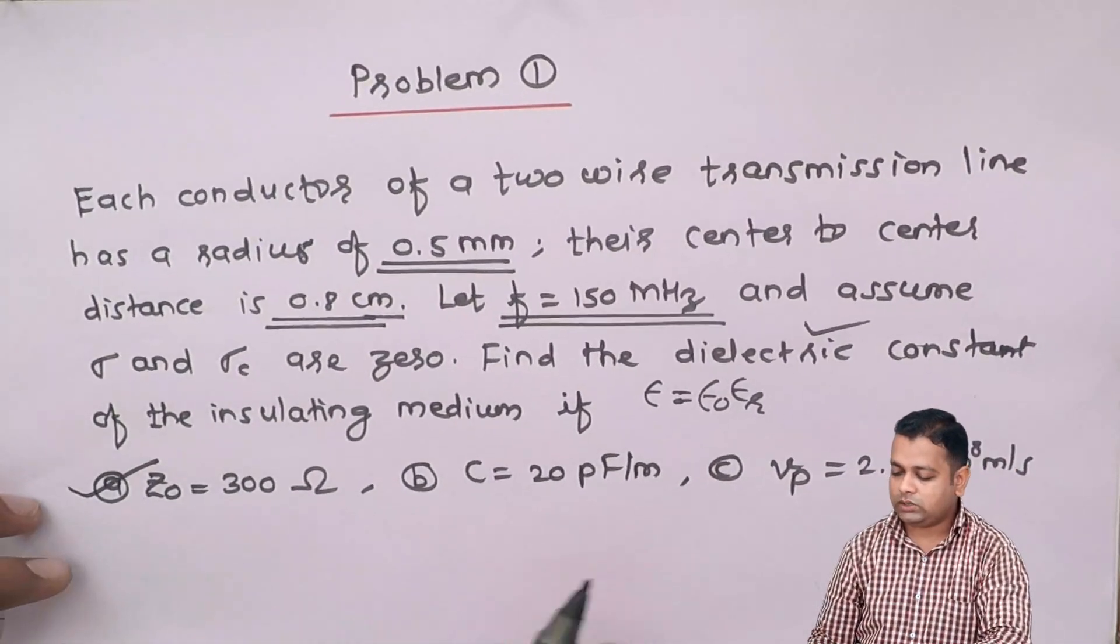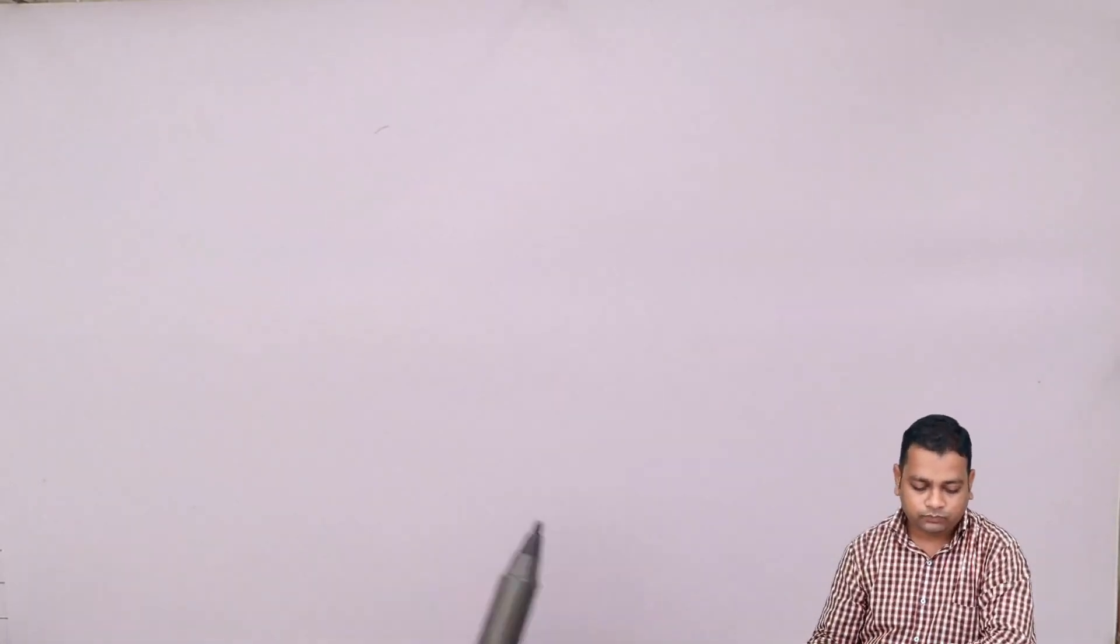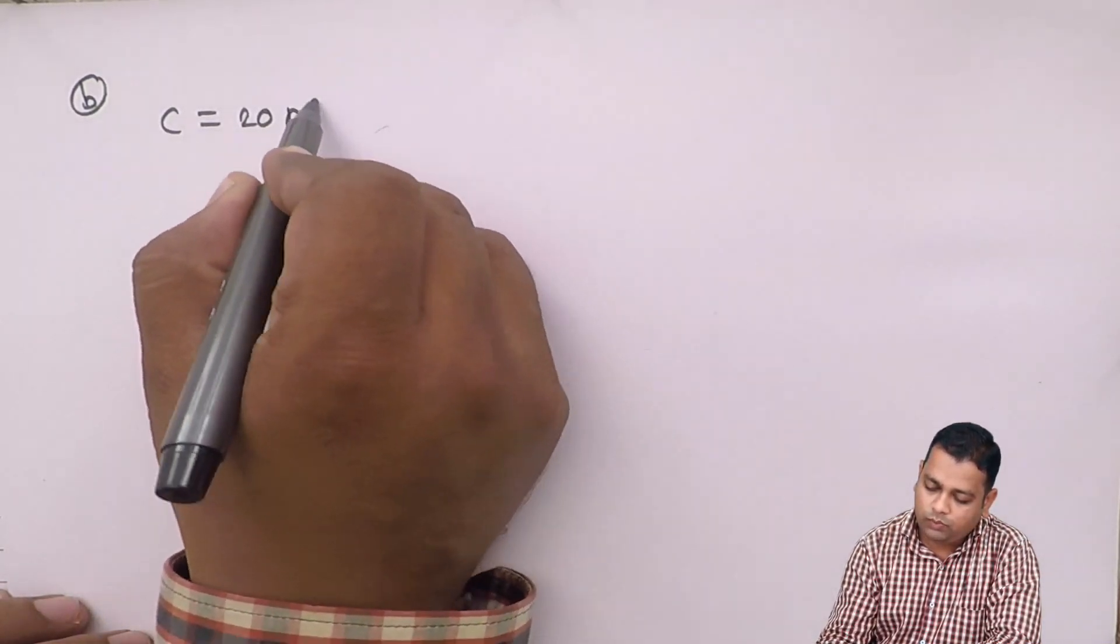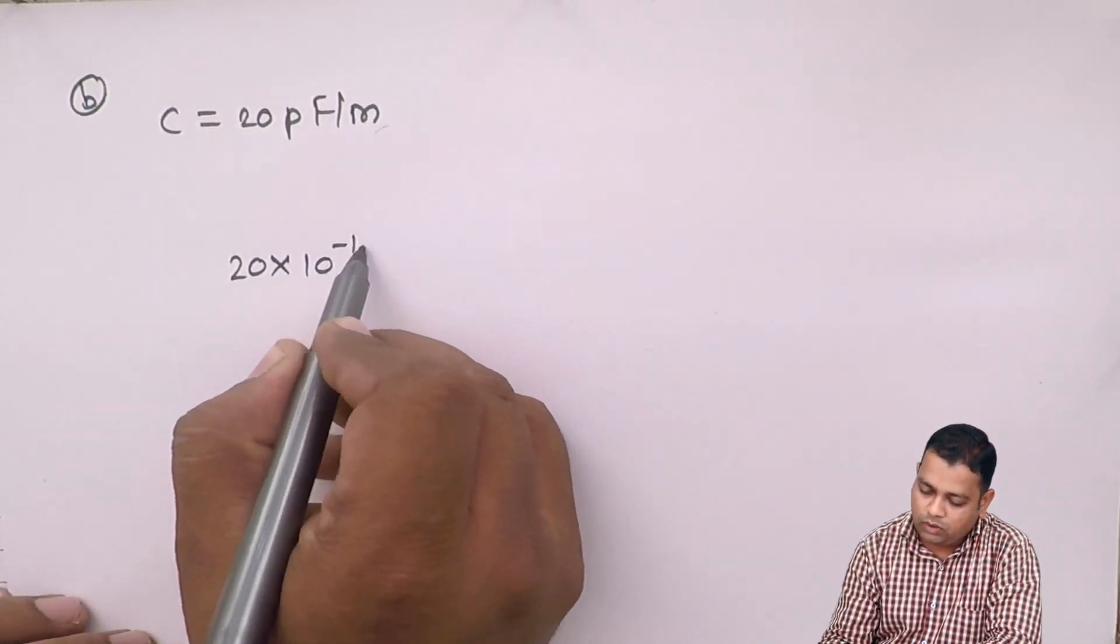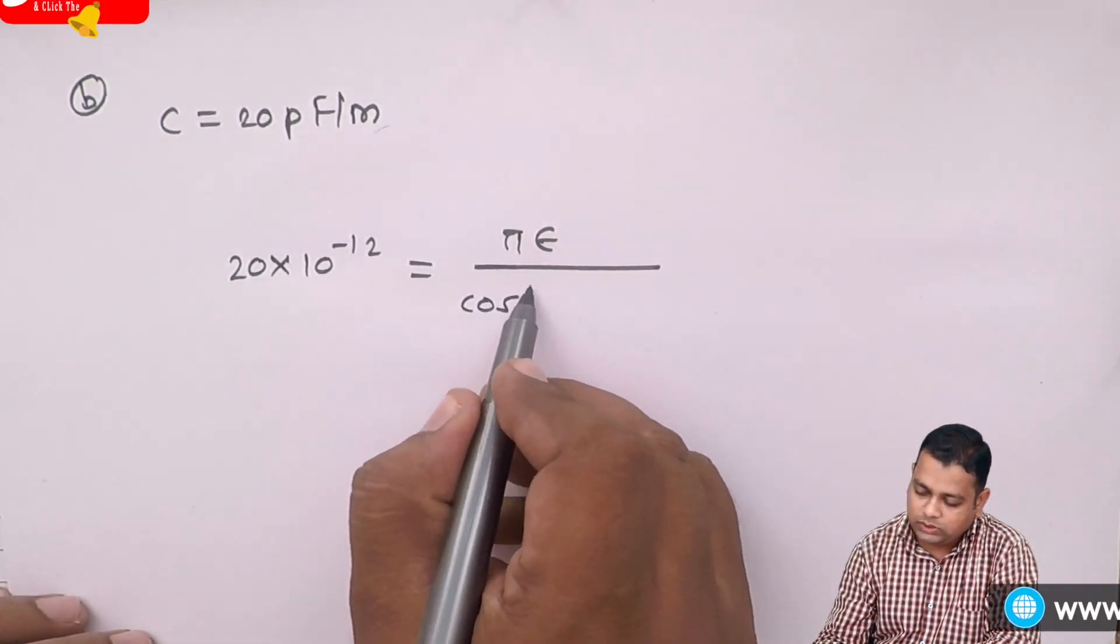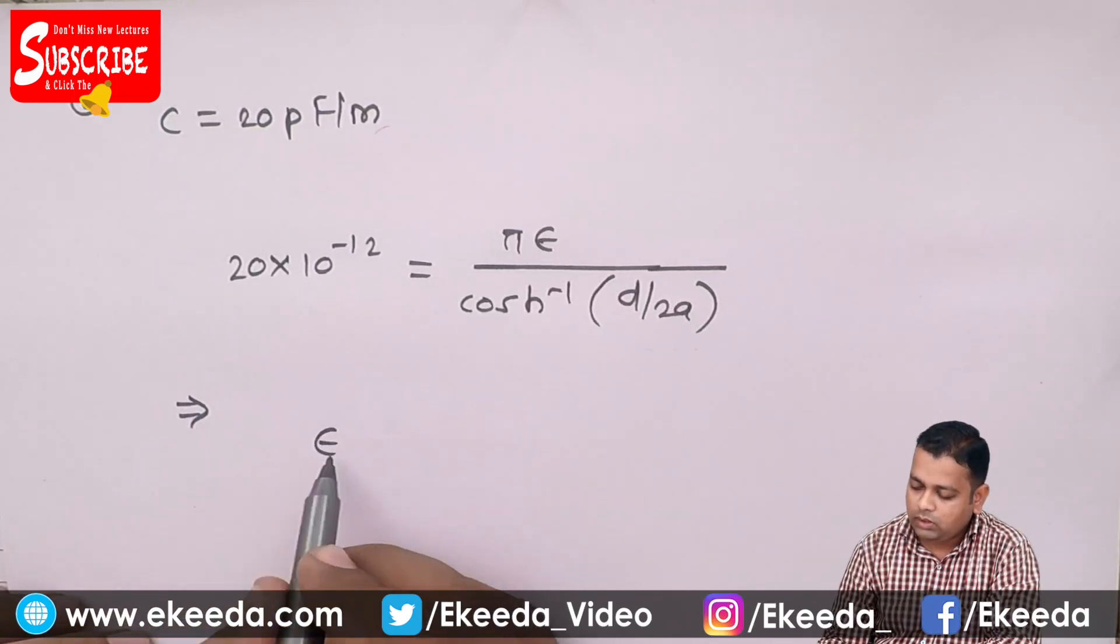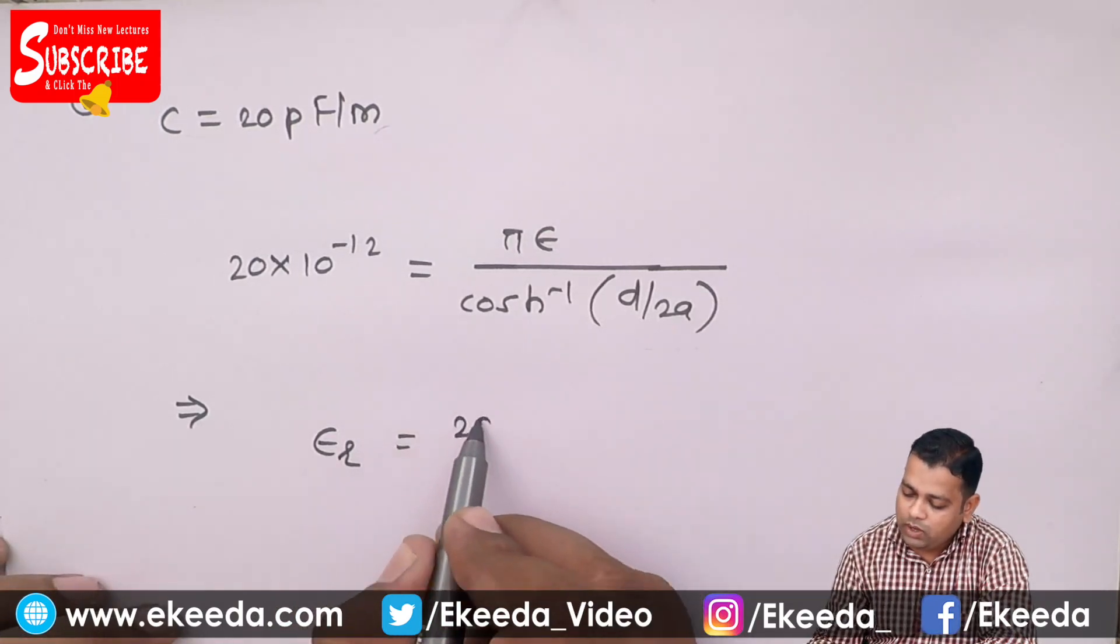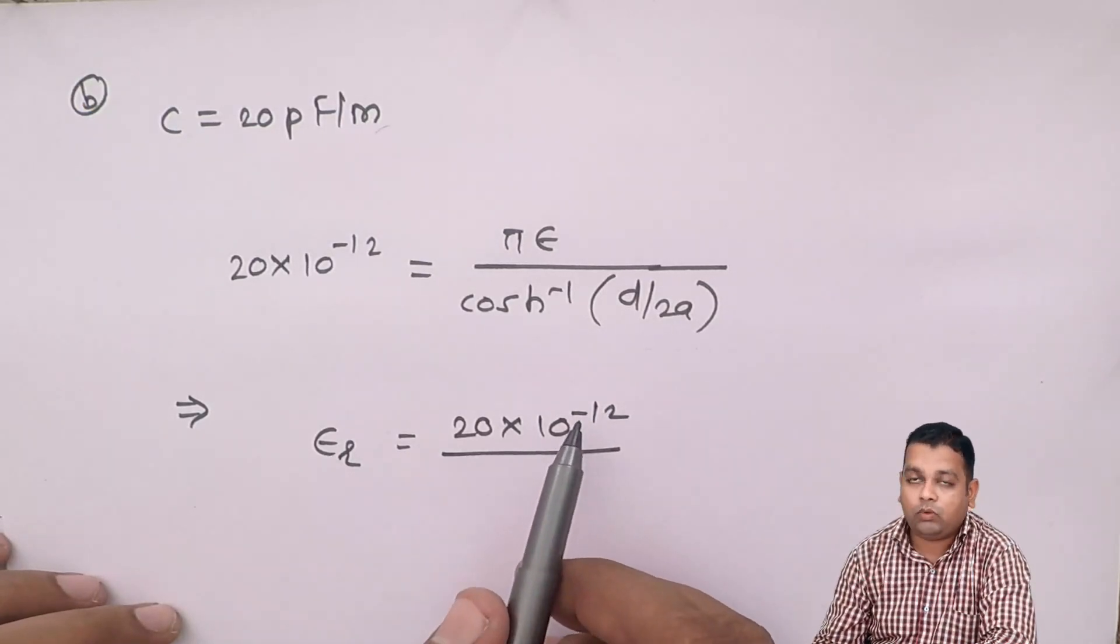Now we concentrate our attention to the second part where we have C equals 20 picofarad per meter. Therefore, for part b, C equals 20 picofarad per meter. Substituting it to the formula of c, we have 20 times 10^-12 equals pi epsilon_r. This particular relation implies us to obtain epsilon_r to the left hand side.